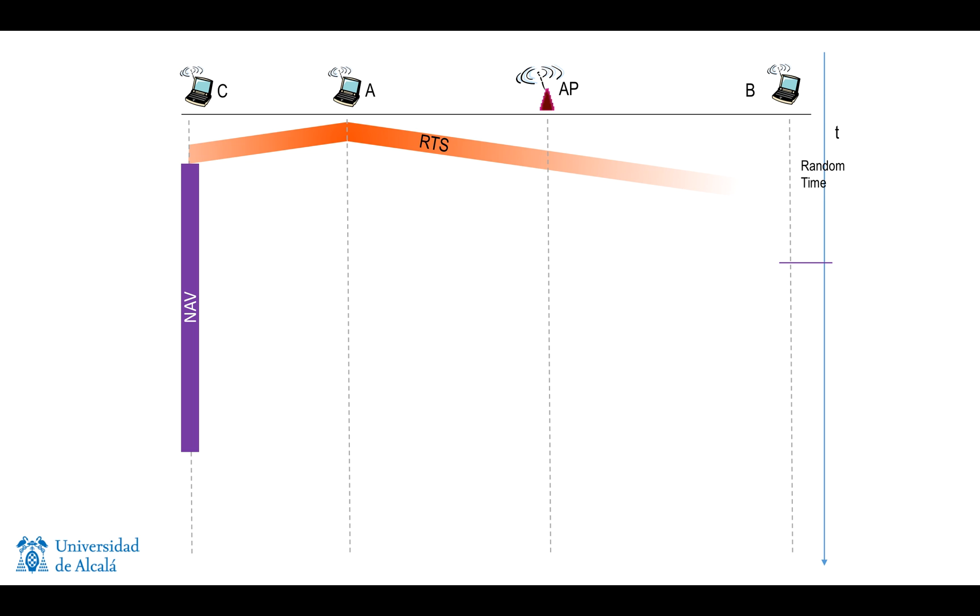After the successful RTS, the access point is going to wait a short time period and send a clear to send to A. This clear to send frame is also received by B, so B also inhibits itself from transmitting during a given amount of time, which is the estimation of the duration of A's transmission.